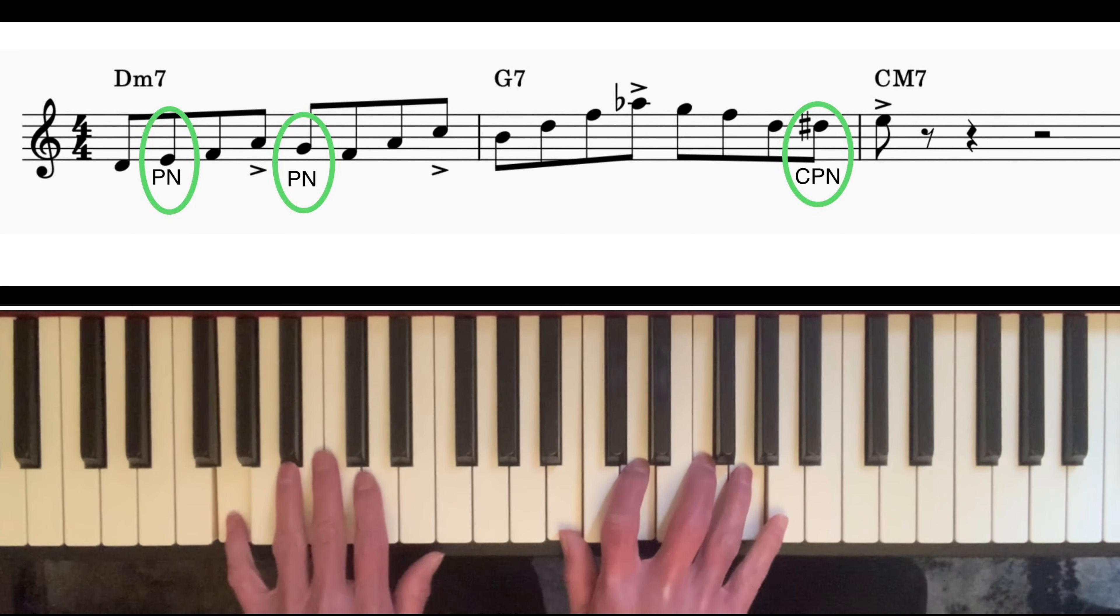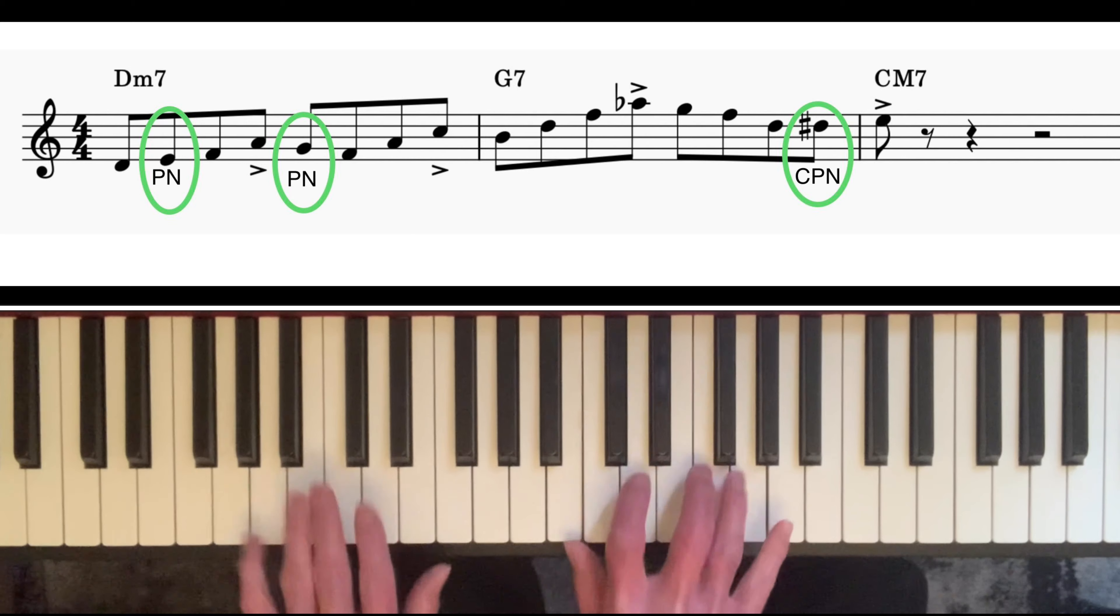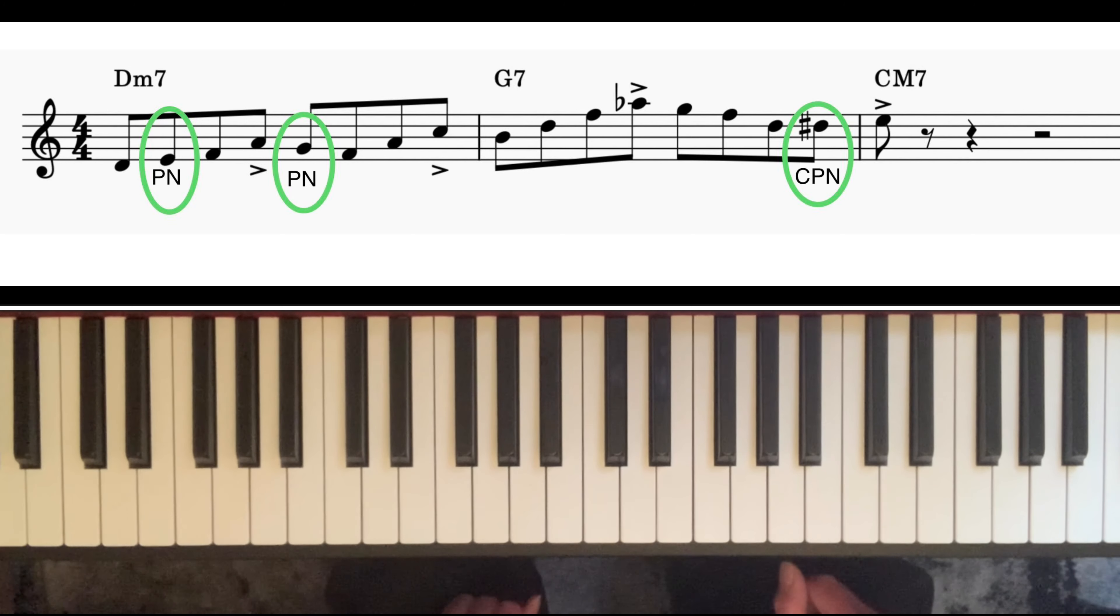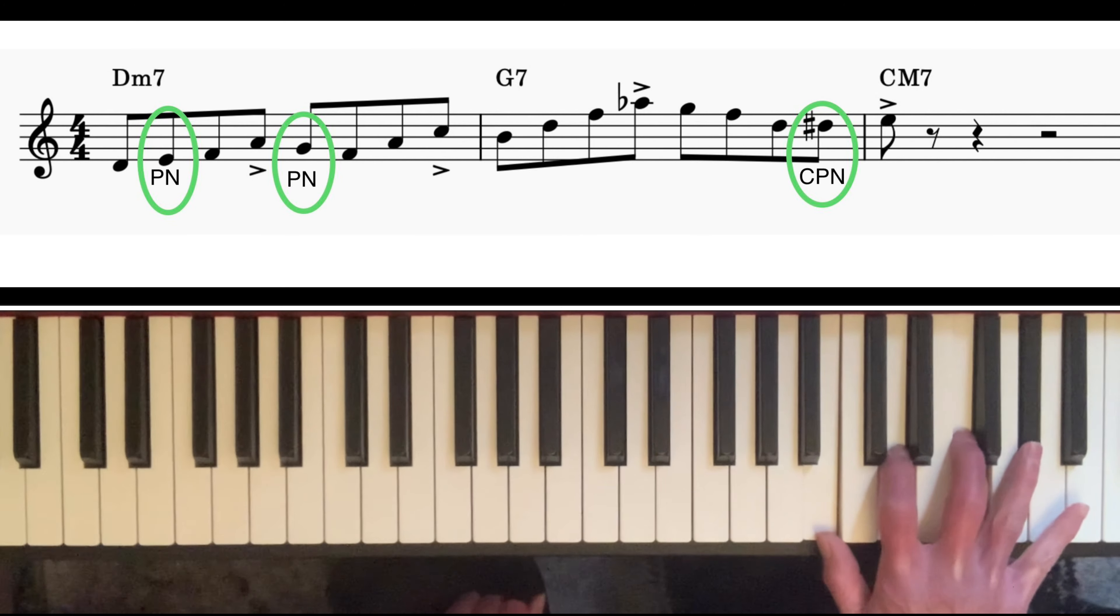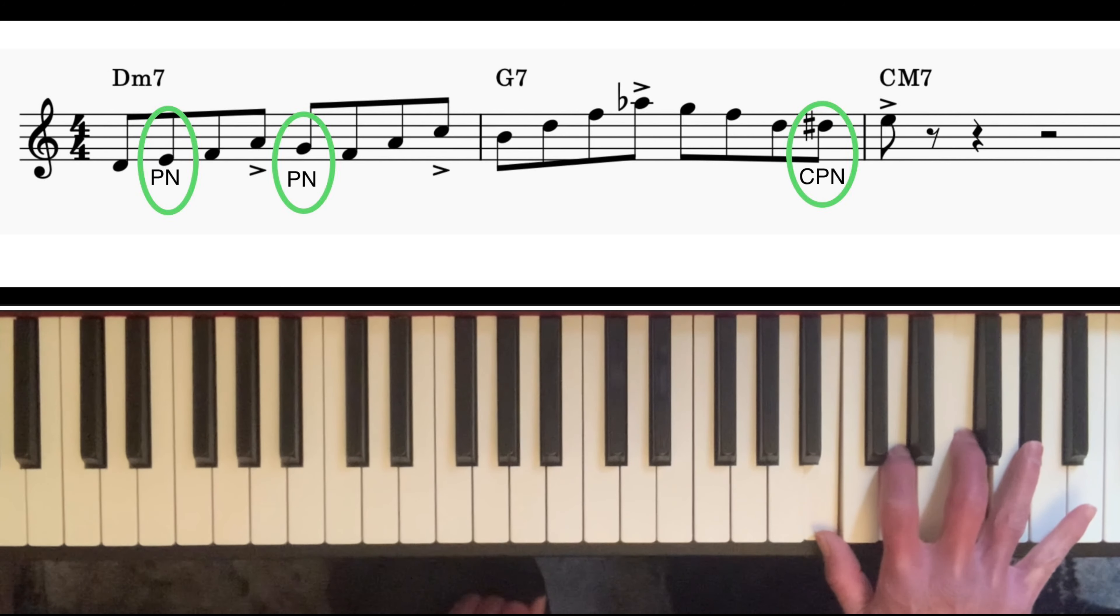On the G7 chord, I played an arpeggio starting on the third, going up not to the ninth but the flattened ninth. Now if you look at those four notes on their own, that's actually a B diminished seventh chord, and I've talked about the use of diminished seventh chords on dominant chords in previous videos in this series.